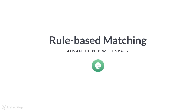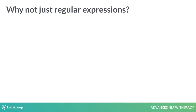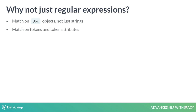In this video, we'll take a look at spaCy's matcher, which lets you write rules to find words and phrases in text. Compared to regular expressions, the matcher works with doc and token objects instead of only strings. It's also more flexible — you can search for texts but also other lexical attributes. You can even write rules that use the model's predictions.